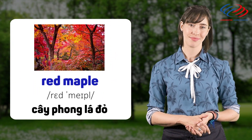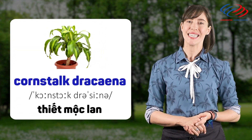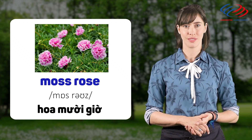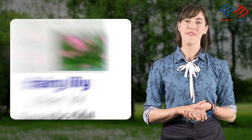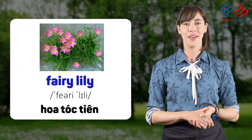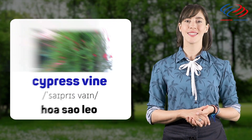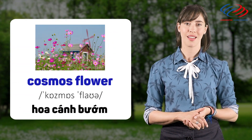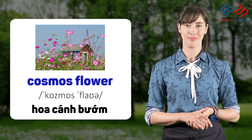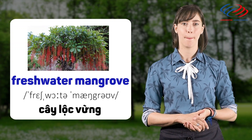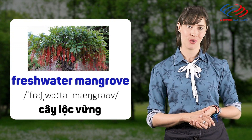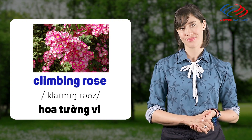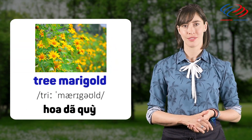Raved maple. Cornstalk dracaena. Cornstalk dracaena. Moss rose. Fairy lily. Fairy lily. Cypress vine. Cypress vine. Cosmos flower. Cosmos flower. Fresh water mangrove. Fresh water mangrove. Climbing rose. Climbing rose. Tree marigold. Tree marigold.